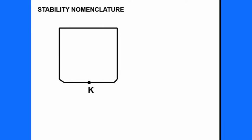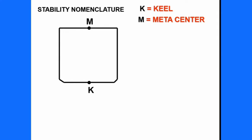The origin of measurement are like this: K represents the keel of the vessel. M represents metacenter. KM represents height of metacenter.